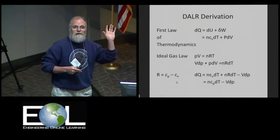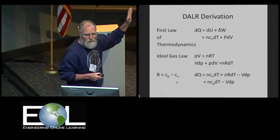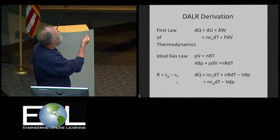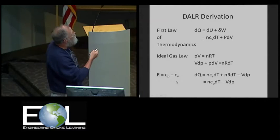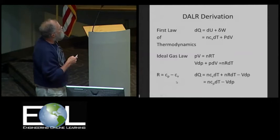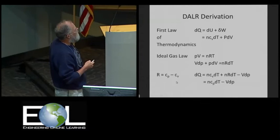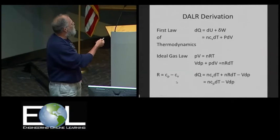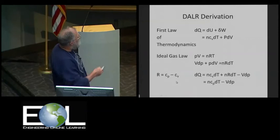The derivation of the dry adiabatic lapse rate brings in several nice physics ideas. You start out with the first law of thermodynamics. That is, the amount of heat that goes into the system is either going to change the internal energy or do some work: dQ = dU + dW. This is the change in the internal energy, N's number of moles, specific heat at constant volume, change in temperature, and the PdV work. Ideal gas law, PV = nRT. If you take the derivative of that, VdP + PdV = nRdT. And R, the gas constant, is the difference between CP, the specific heat at constant pressure, and CV, the specific heat at constant volume. So there's nice thermodynamics in here.